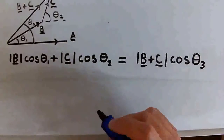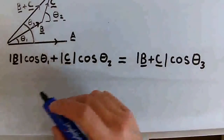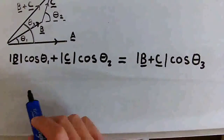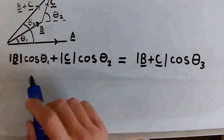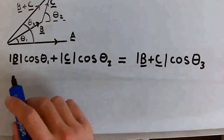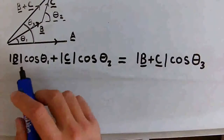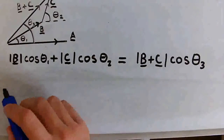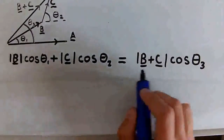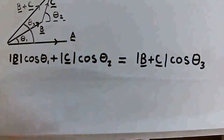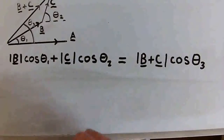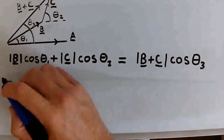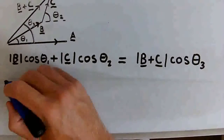We're actually very close to finishing our proof. The one thing left to do, before we prove that the dot product is distributive, is to multiply both sides of this equation by the magnitude of vector A. So I'll just write this out.